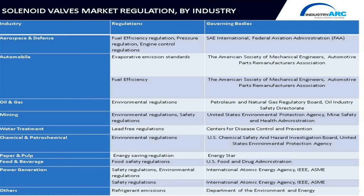For mining, environmental and safety regulations are governed by the United States Environmental Protection Agency and Mine Safety and Health Administration. For water treatment, lead-free regulation is governed by the Center for Disease Control and Prevention. For chemical and petrochemical, environmental regulations are governed by the US Chemical Safety and Hazard Investigation Board and the United States Environmental Protection Agency. For paper and pulp, energy saving regulation is governed by Energy Star.